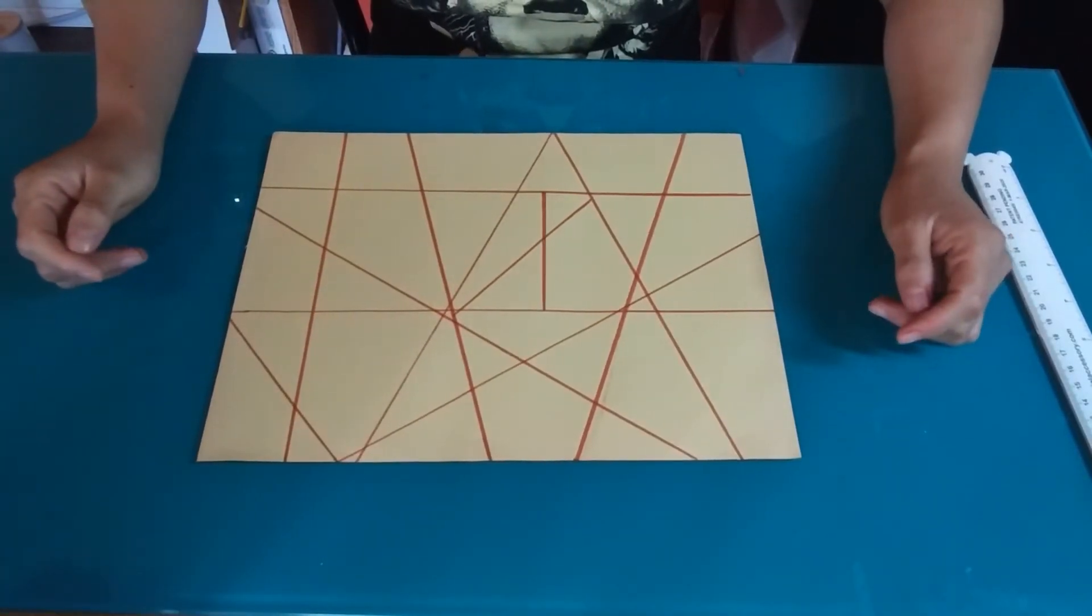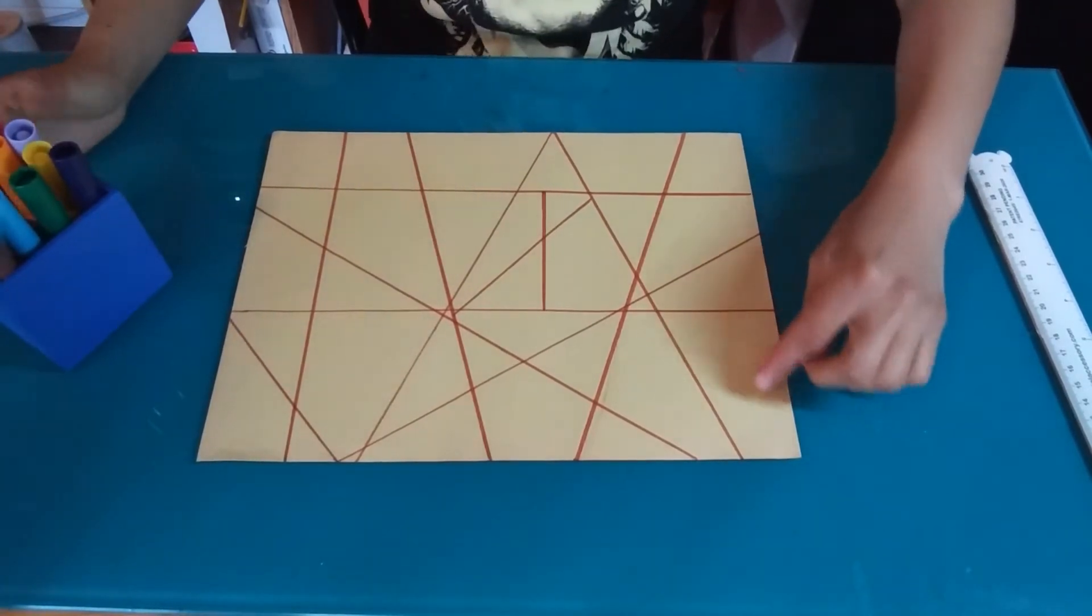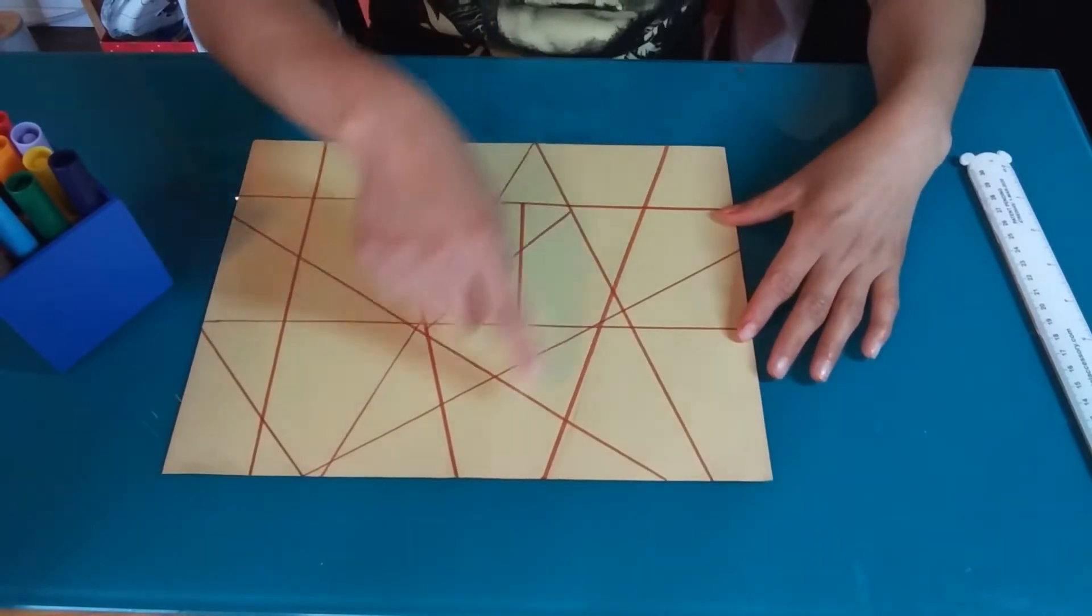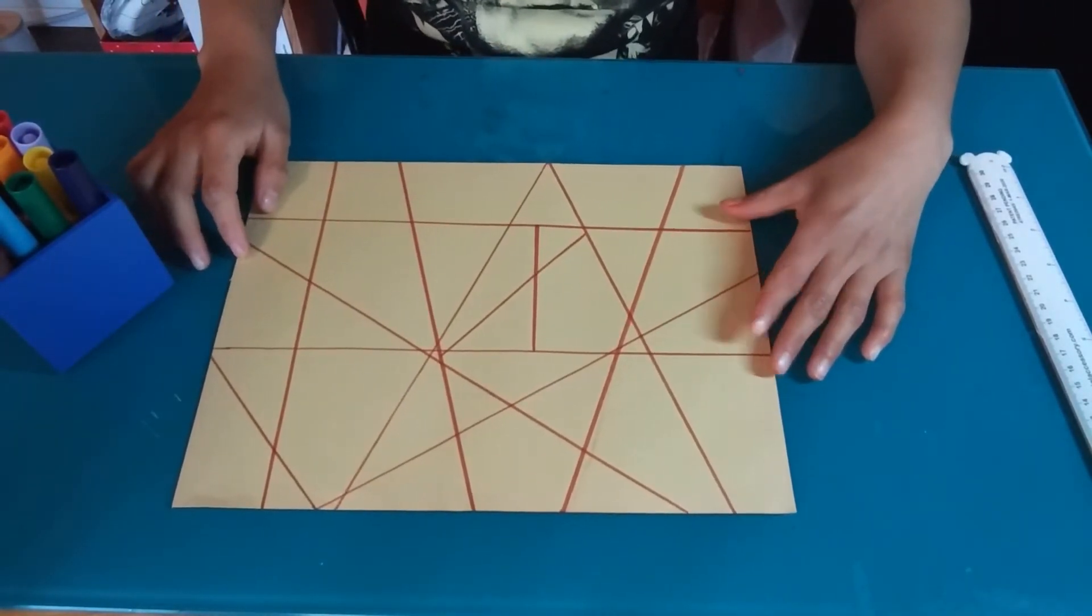Once you are happy with the amount of lines that you have, you can color inside the lines. And as you can tell, there's kind of a lot of shapes in here. What shape do you see most of?